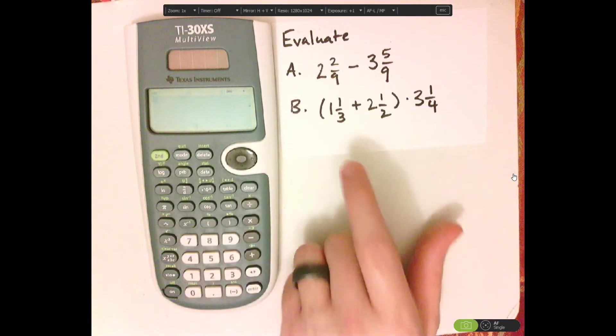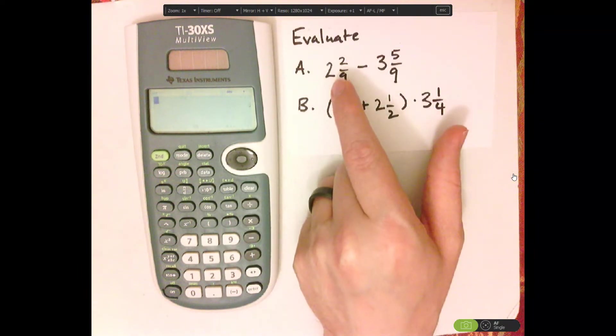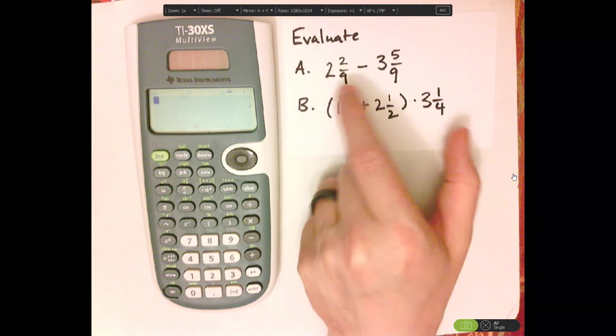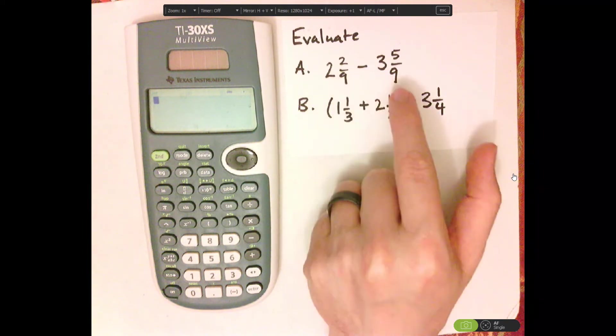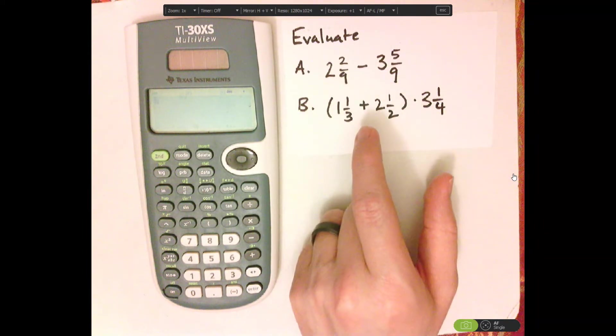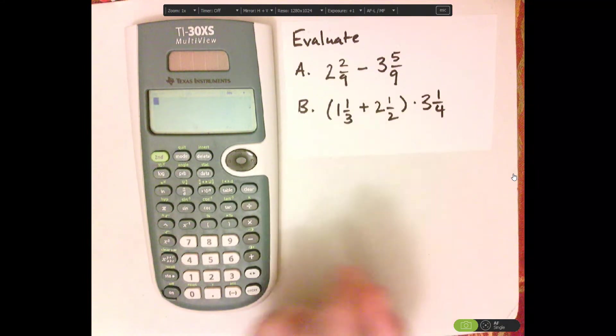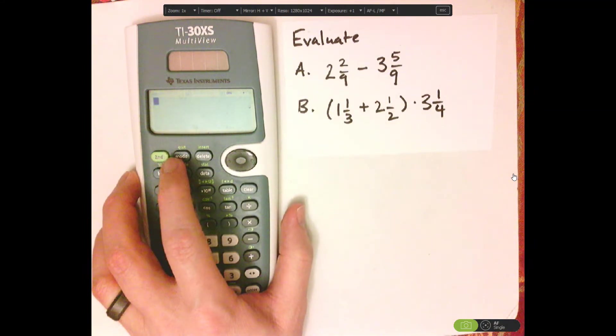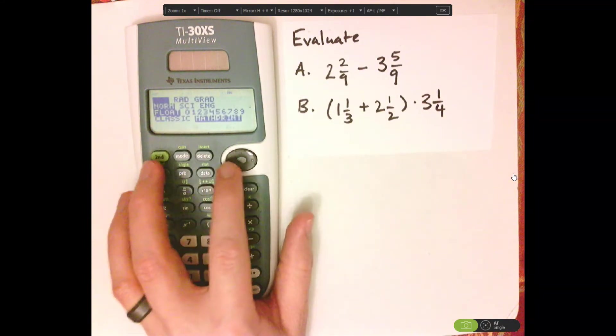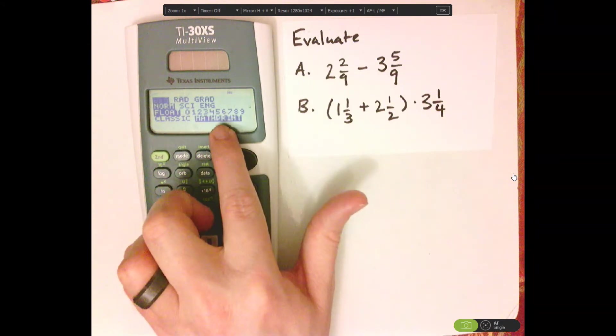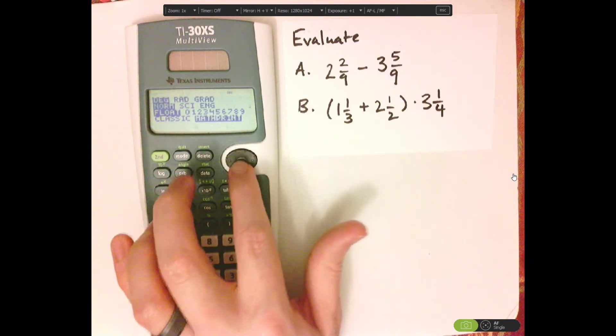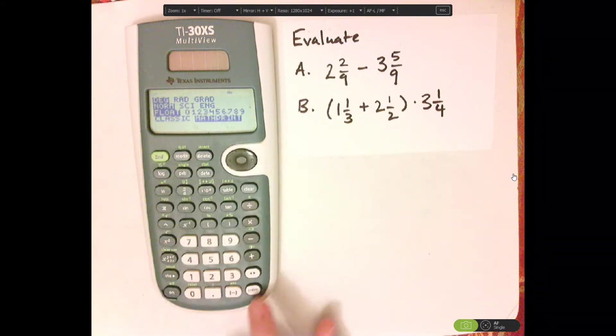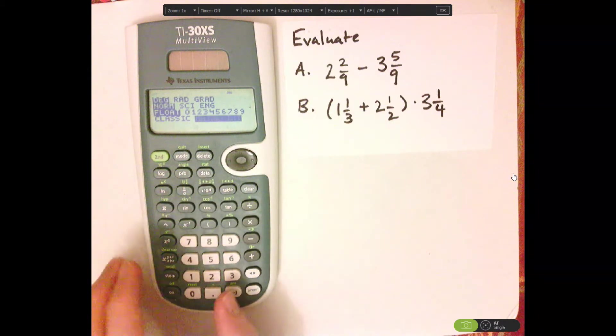Alright, so let's do these. Usually if the problems are as mixed numbers, they want the answer as a mixed number. And we want that to be nice, so we're going to make sure it's in math print. So go to mode, and notice that's already in math print. If it wasn't, you would highlight it and push enter. That turns it off, it turns it on when you do that.